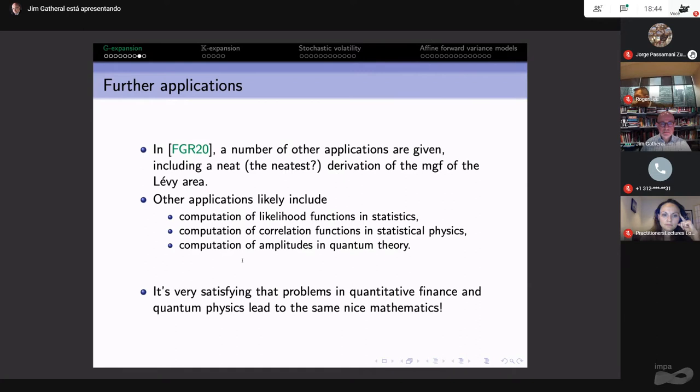We give a number of other applications, including possibly the neatest derivation of the moment generating function of the Levy area. Other applications likely include computation of likelihood functions of statistics, correlation functions of statistical physics, and amplitudes in quantum theory. It's just very satisfying to see that problems in quantitative finance and quantum physics and elsewhere probably lead to the same nice mathematics.